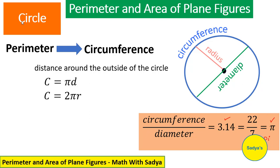Area of a circle is equal to pi r square. How we get it? Let's see.